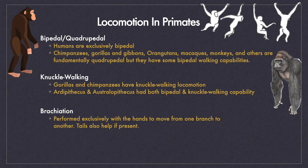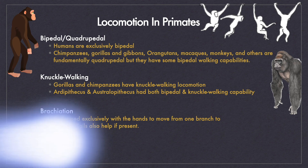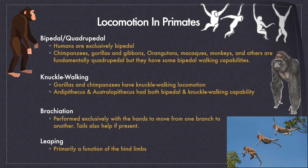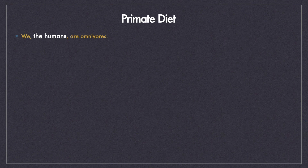Monkeys perform brachiation locomotion by using their hands and tail exclusively to move between the branches of a tree. The leaping locomotion by primates is performed by using their hind limbs.